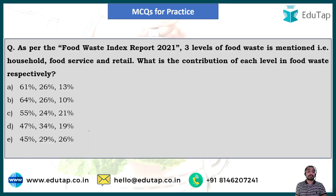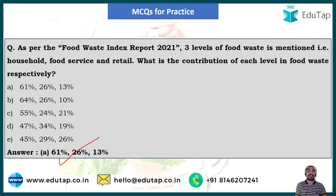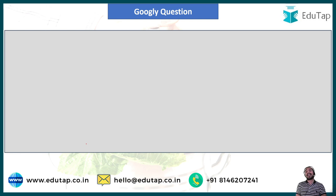Question 3: What is the contribution of household, food services, and retail respectively to food waste? The correct answer is option A — 61 percent, 26 percent, and 13 percent.